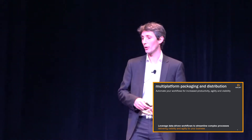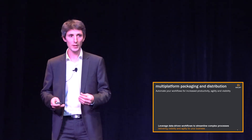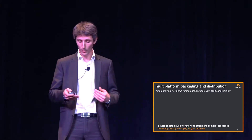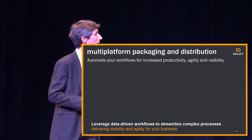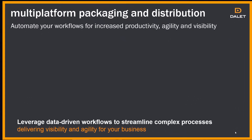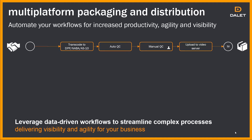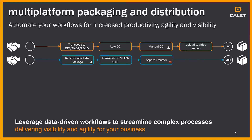The next scenario is multi-platform packaging and distribution — how can you automate and distribute more content without having to increase the number of resources you have? If we step back maybe 20 years ago, you had one contract to deliver one package to one outlet: linear TV. Then we moved to traditional VOD, which brought a new set of metadata requirements, different formats, and different delivery methods — so you had to manage two different outputs at the same time.